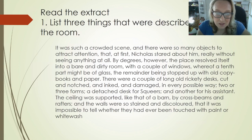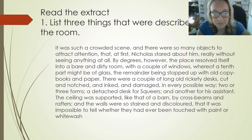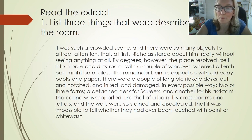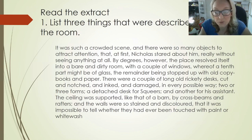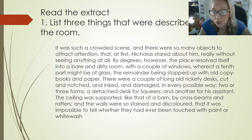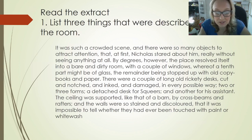'And the walls were so stained and discoloured that it was impossible to tell whether they had ever been touched with paint or whitewash.' So let's go back to the question — list three things that were described in the room. Well, firstly in the first sentence you get the words 'there were so many objects.' Then you might put the fact that the windows were stopped up with old copy books and paper, or the long old rickety desks, or the desk for squares and another for his assistant.